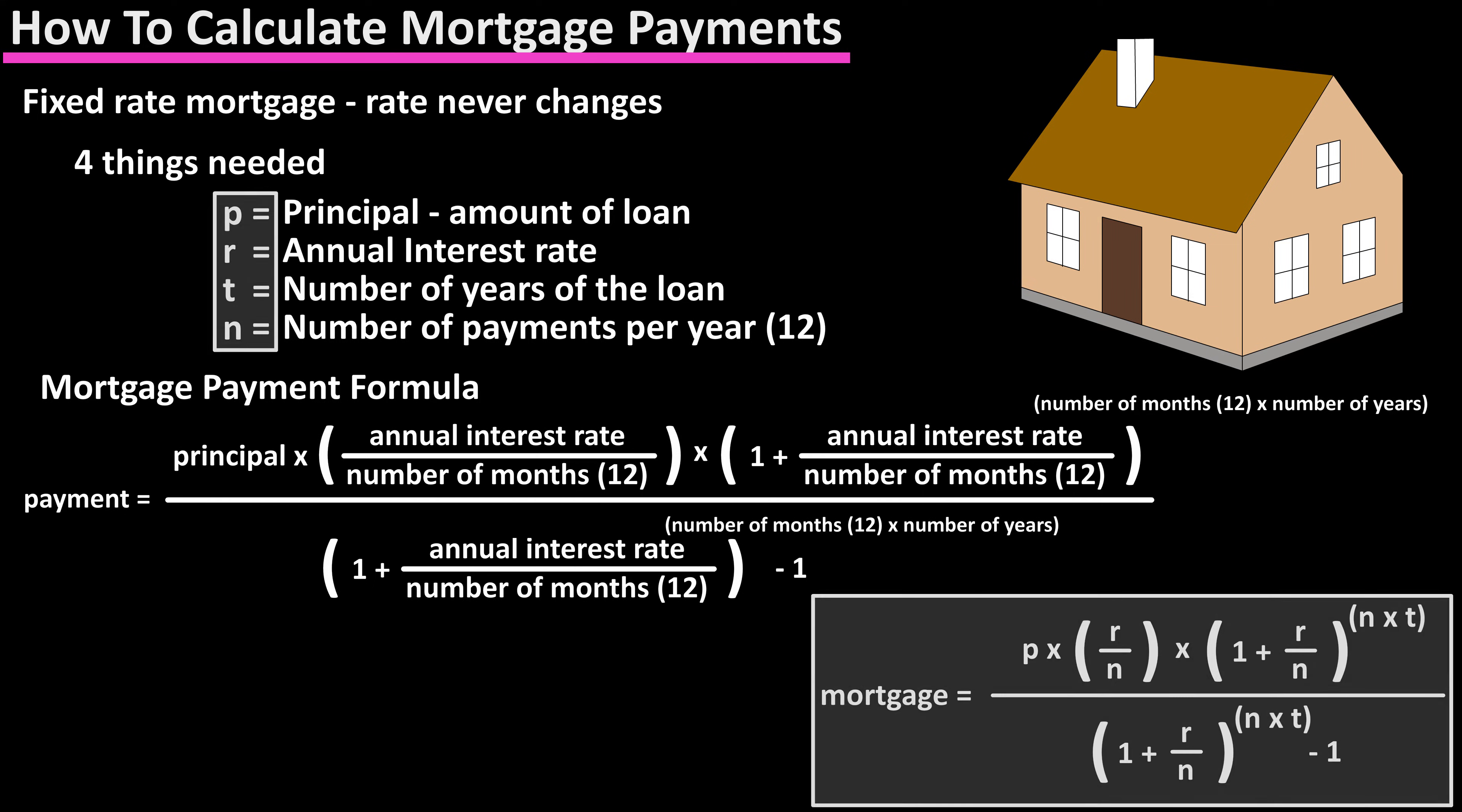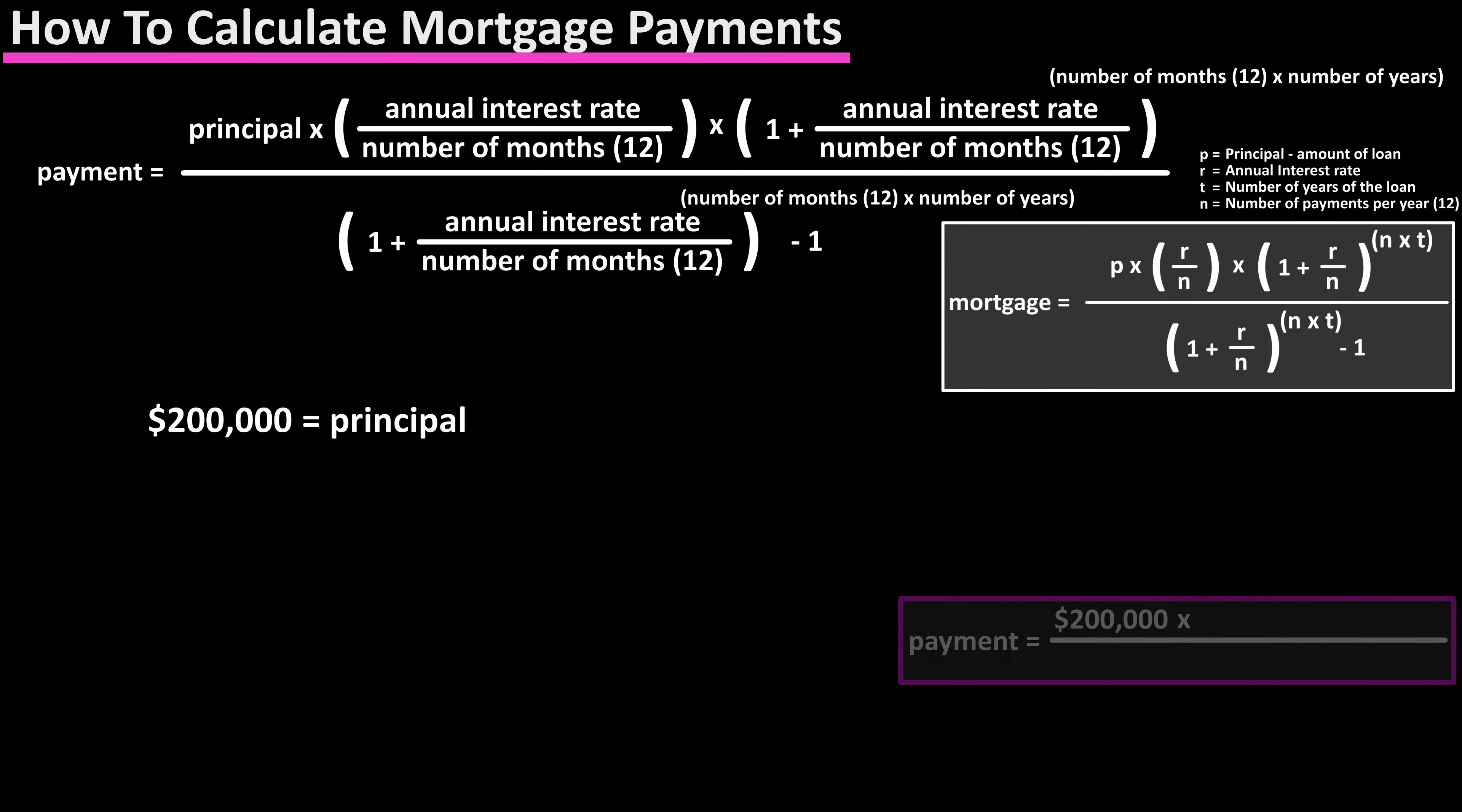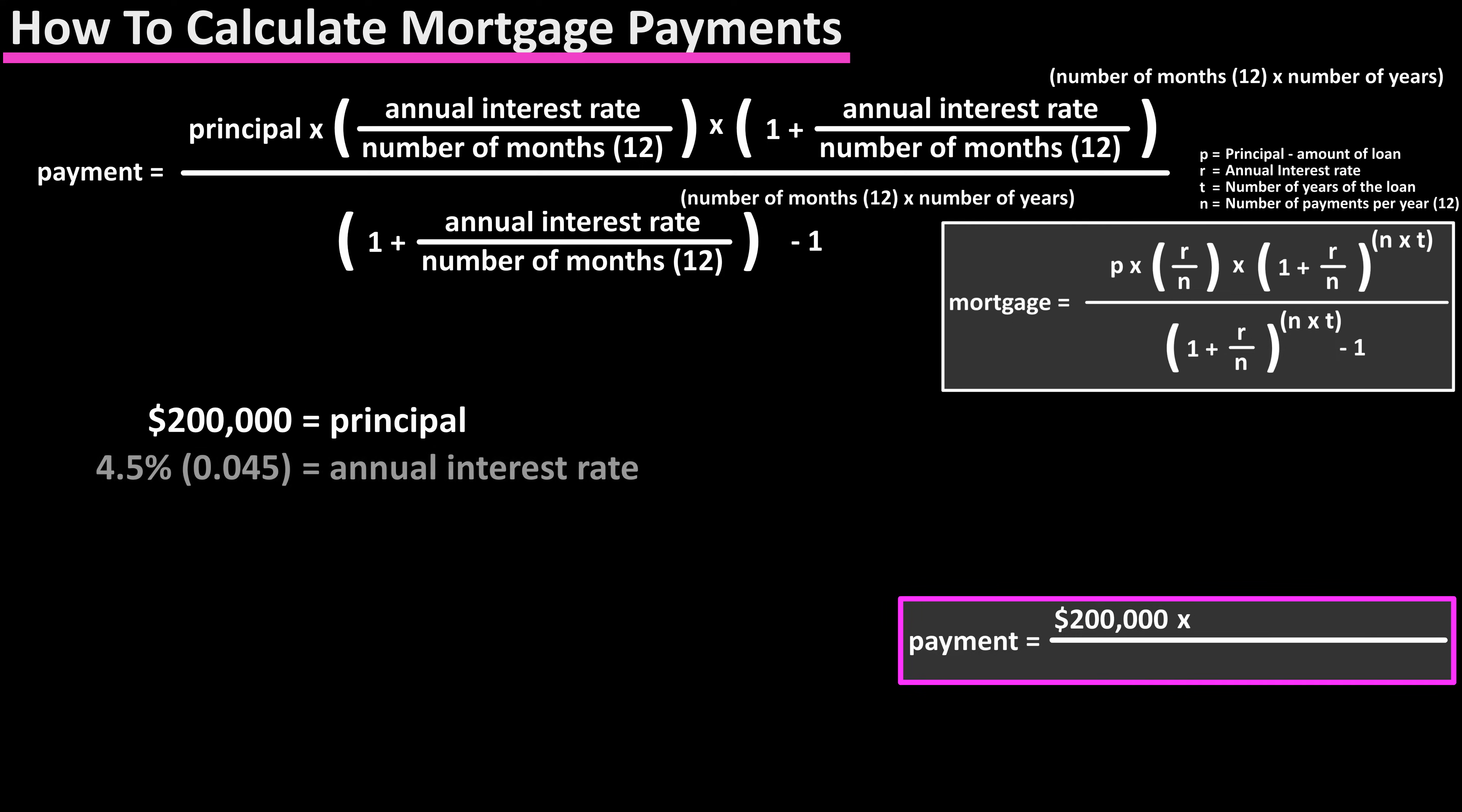I shorten the formula using the symbols as you see here. This formula may seem a bit intimidating, but if you break it down, it's much easier to work with. So let's say that after your down payment you're left owing $200,000, which is your principal. The annual interest rate is 4.5%, the loan is for 30 years, and there are 12 payments per year.